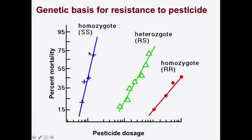Now when they first tried DDT, it worked great because most insects had a susceptibility allele, and they were in fact homozygous for the susceptibility allele. And so the pesticide worked — you were able to get rid of 75 to 80% of all the insects in a field with your first application.